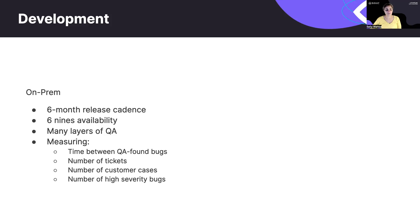In terms of measuring things from a developer's perspective, we measured things like the time between bugs found by QA, the number of tickets an engineer has, the number of customer cases an engineer needed to be involved in, or the number of high-severity bugs — whether found by QA or by a customer. We also had an entire organization dedicated to performance, whether creating new features to improve system performance or running industry-standard benchmarks. If code was checked in that caused a performance degradation, that code was automatically backed out.